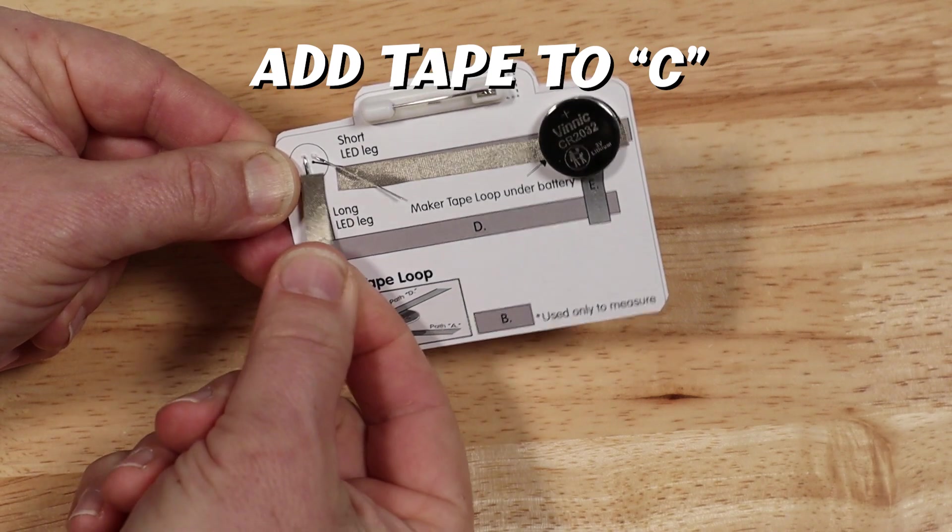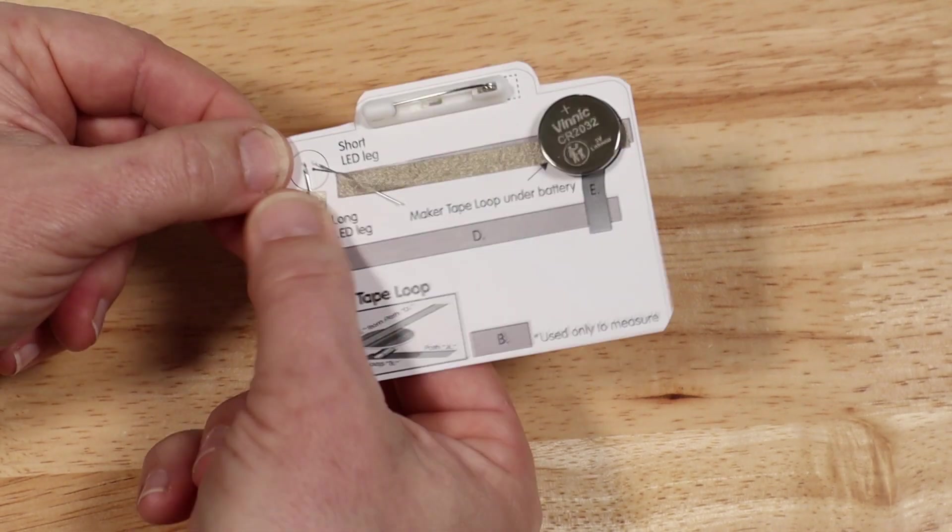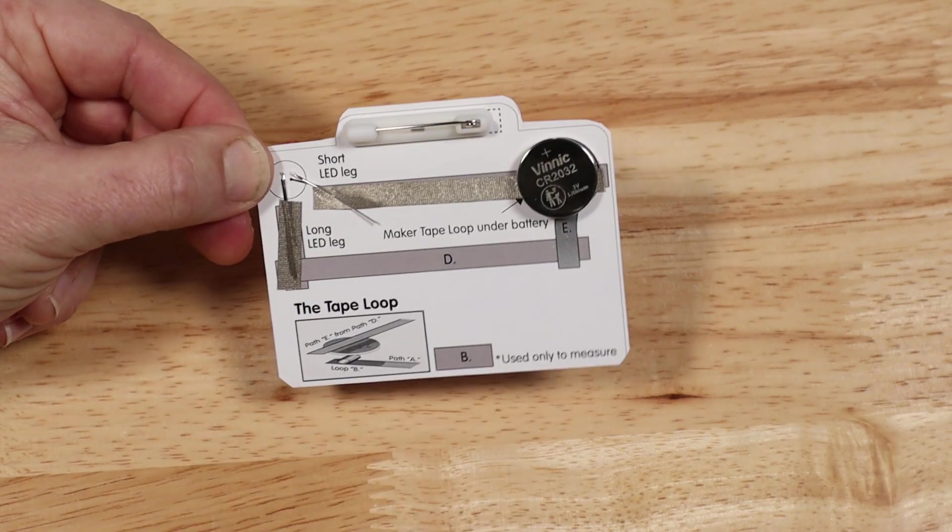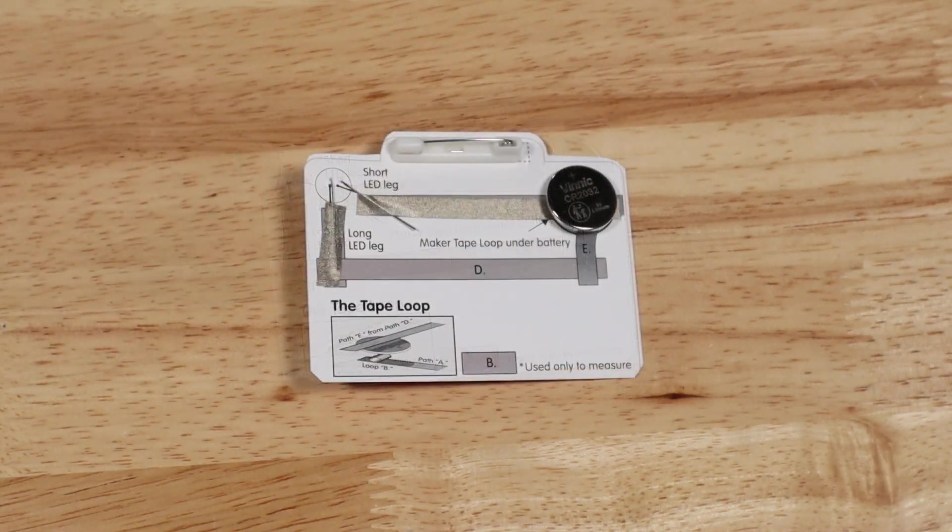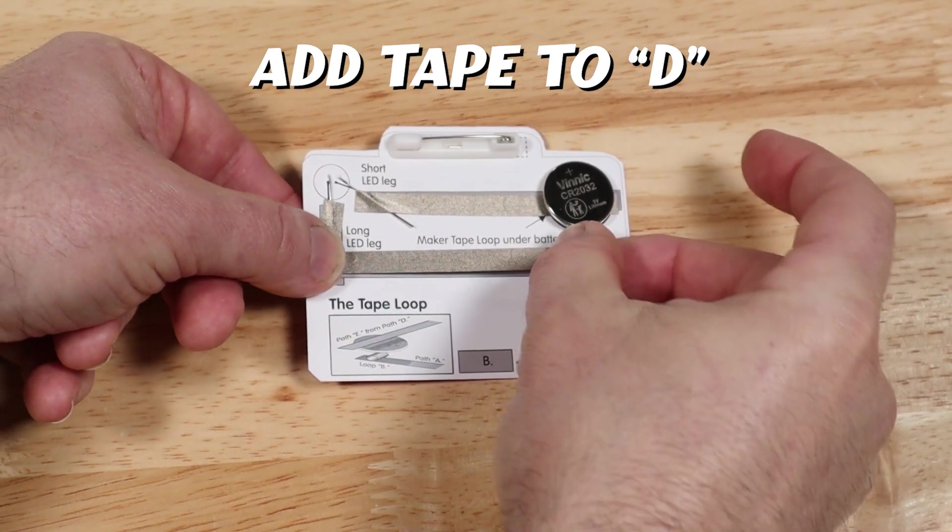Cut a piece of tape and place it over the long leg of the LED at C. Then cut a long piece of maker tape and add it at position D.